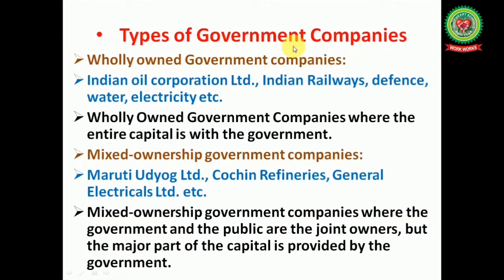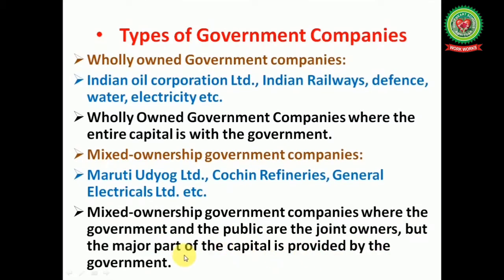The types of government companies are: first, wholly owned government companies — for example, Indian Oil Corporation Limited, Indian Railways, defense, water, electricity — where the entire capital is with the government. Second, mixed ownership government companies — for example, Maruti Udyog Limited, Cochin Refineries, and General Electricals Limited — where the government and the public are joint owners but the major part of capital is provided by the government.